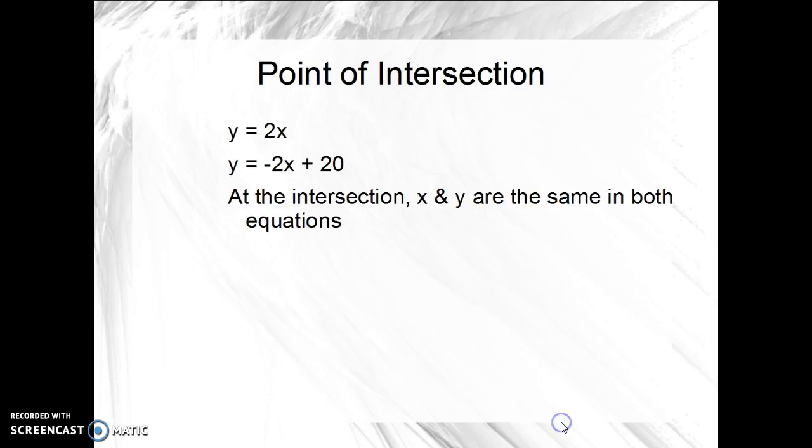Having written down the two equations, we see that x and y are the same in both. And so we can just take the 2x instead of the y and put it down here. Instead of the y in this equation, we have 2x. And so we have 2x equals negative 2x plus 20.